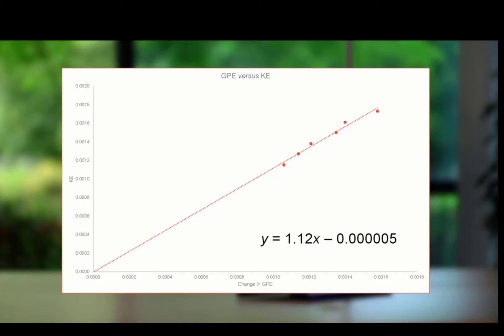The gradient of the graph is almost 1 and the y-intercept is almost 0. When the piece of card is let go, the gravitational pull starts doing some mechanical work on the card, transferring some of the gravitational potential energy into kinetic energy.